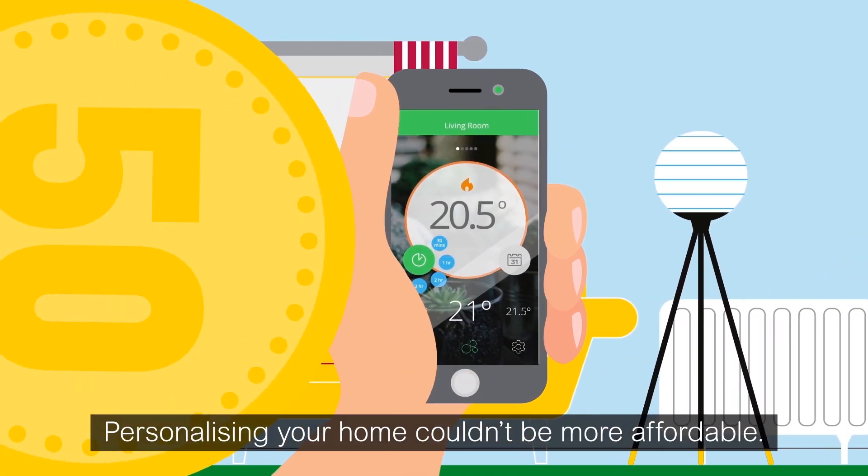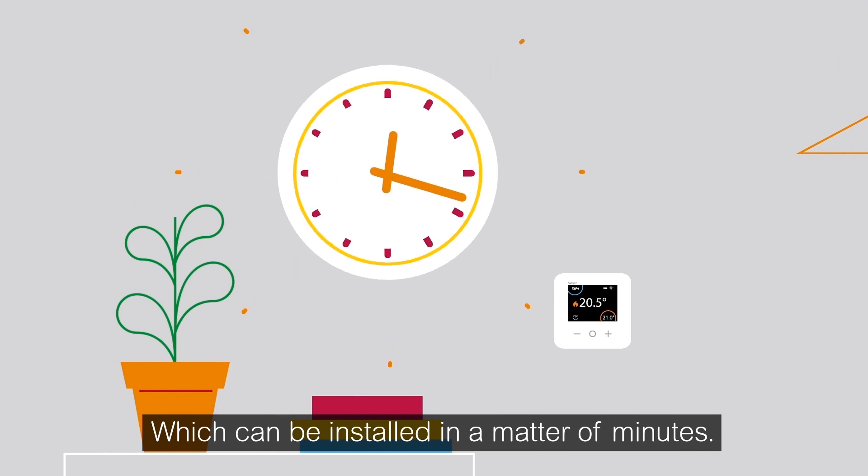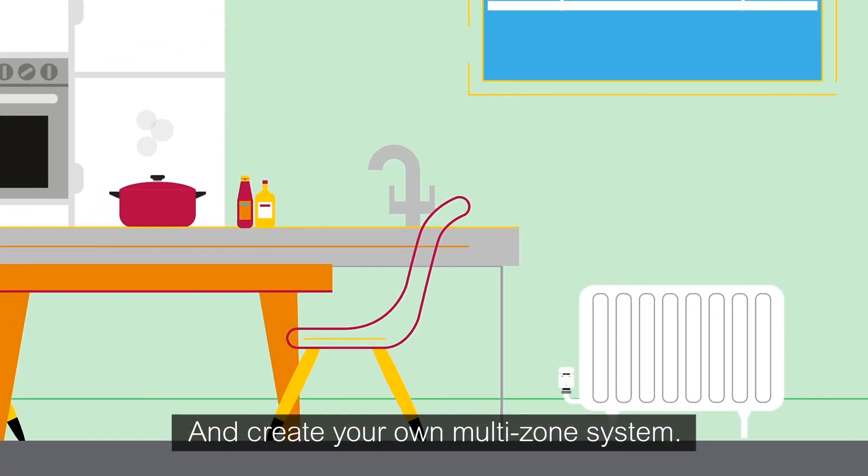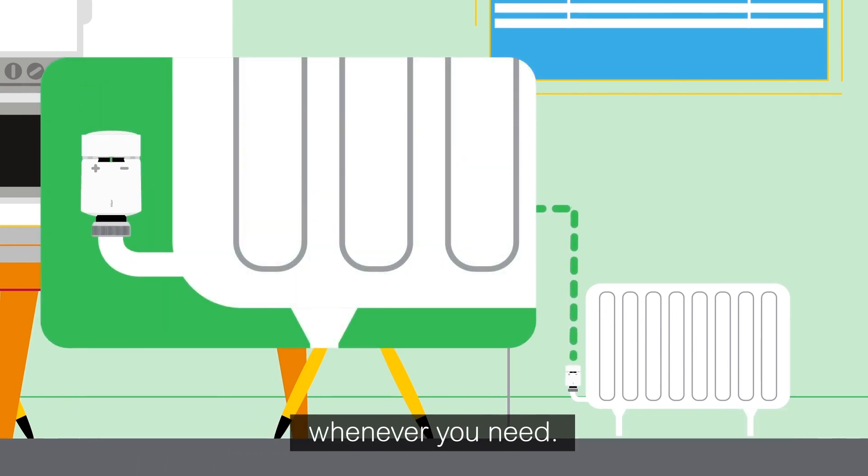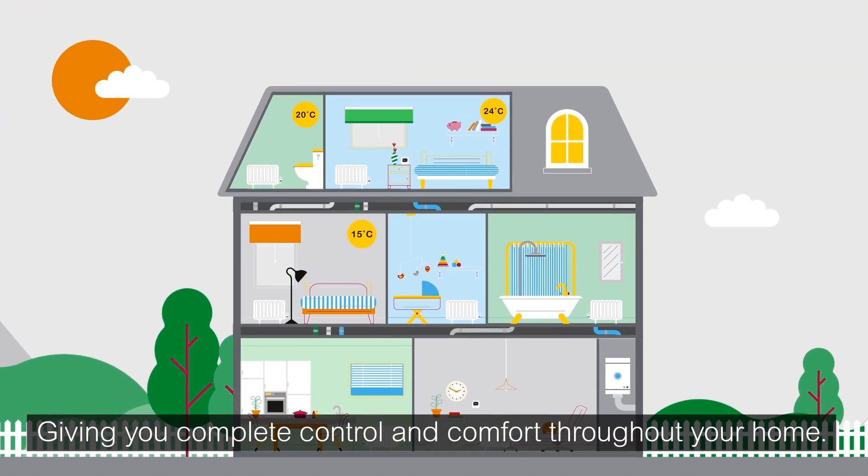Personalizing your home couldn't be more affordable. Start with our wireless smart room thermostat, which can be installed in minutes, and create your own multi-zone system by adding a radiator thermostat to each room whenever you need, giving you complete control and comfort throughout your home.